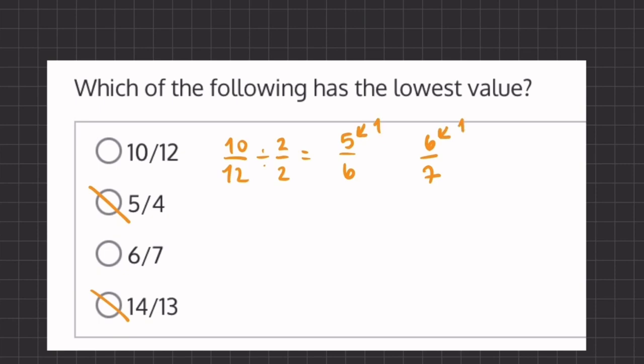And the numerator with the smaller value will give us a smaller fraction, meaning that 5 over 6 will be smaller than 6 over 7 because of its smaller numerator. And so 10 over 12 will be our smallest value.